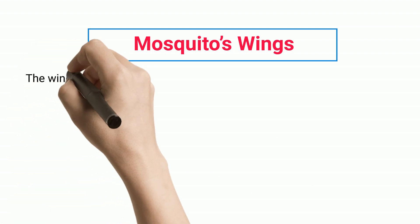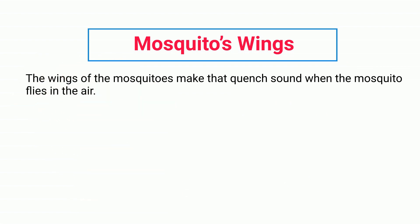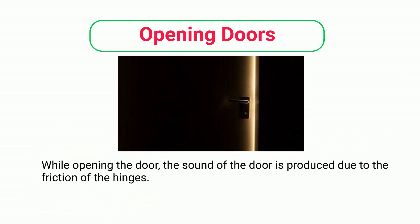Mosquito's wings. The wings of the mosquitoes make that quench sound when the mosquito flies in the air. Opening doors. While opening the door, the sound of the door is produced due to the friction of the hinges.